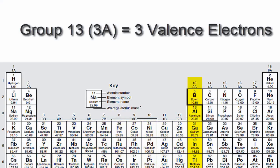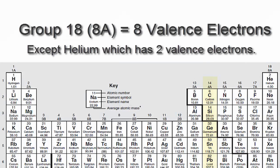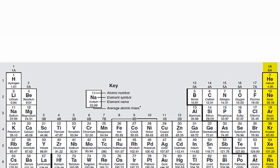We'll go to 13 or 3A, which have three valence electrons, then 14 or 4A. Each of those elements in group 14 or 4A have four valence electrons, all the way up to group 18 or 8A, which have eight valence electrons.